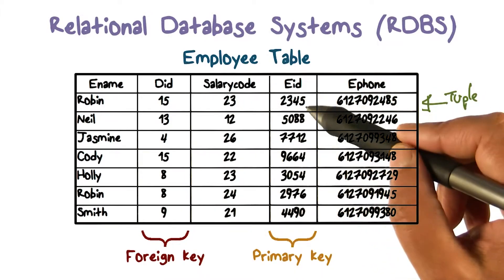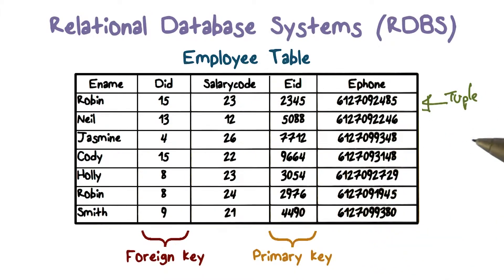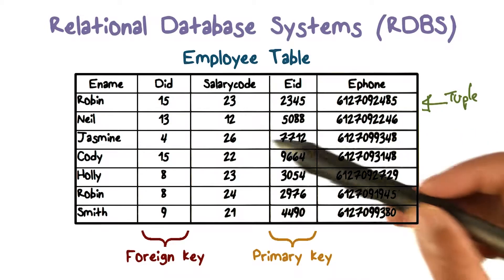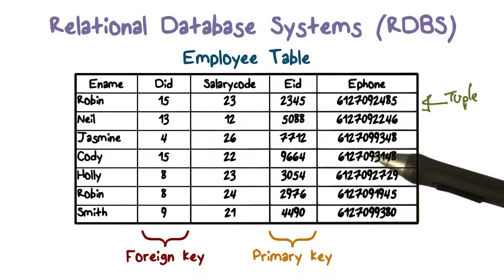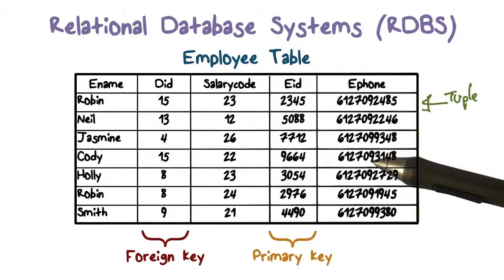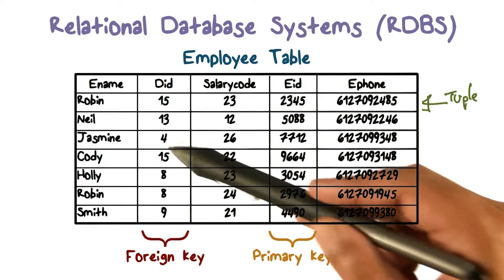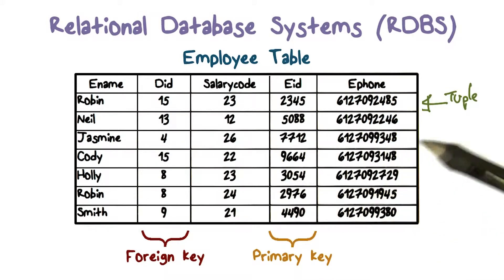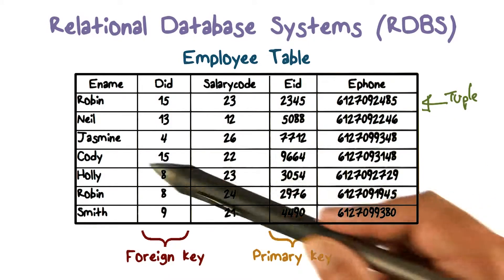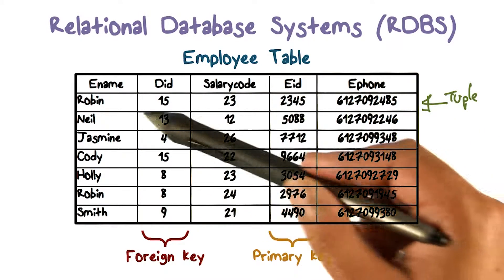So in the case of Robin, for example, 2345 is the primary key value for employee Robin. Primary keys are how we actually specify which set of employees we want to get information about. This is the key, and these are the key values we have here.